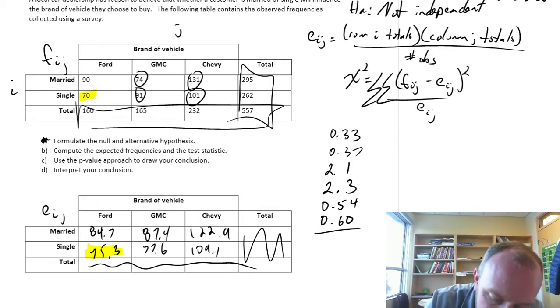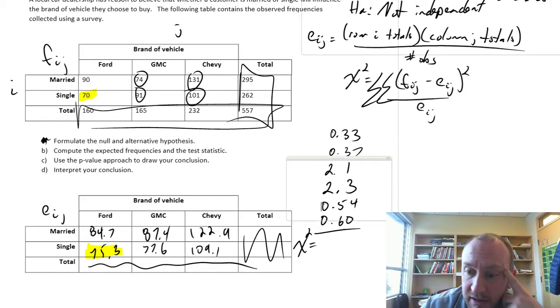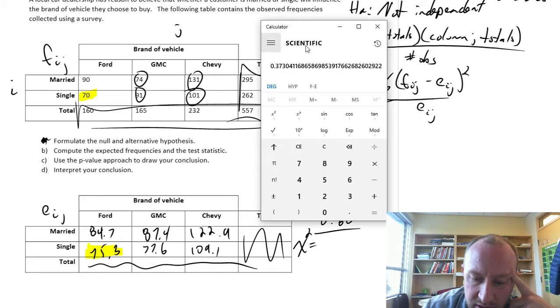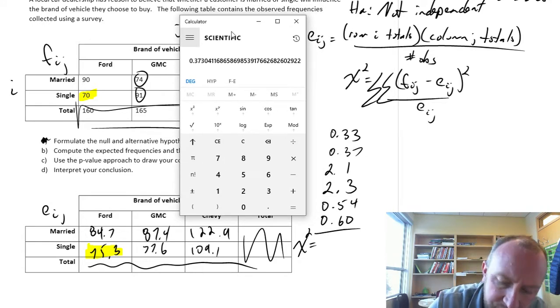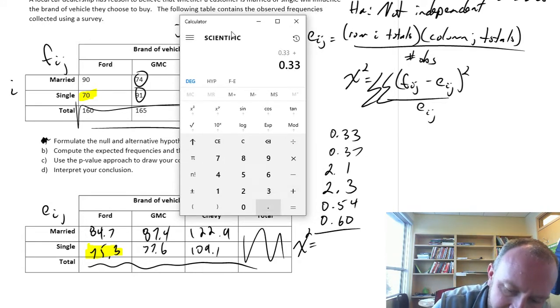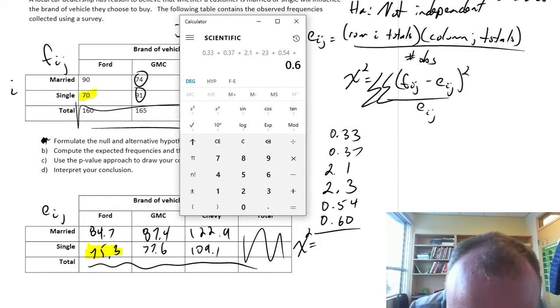So there's all of those differences squared divided by the expected value. Now we add all of those up to find our test statistic. So here, let's just quickly crunch those. So 0.33, plus 0.37, plus 2.1, plus 2.3, plus 0.54, plus 0.6.